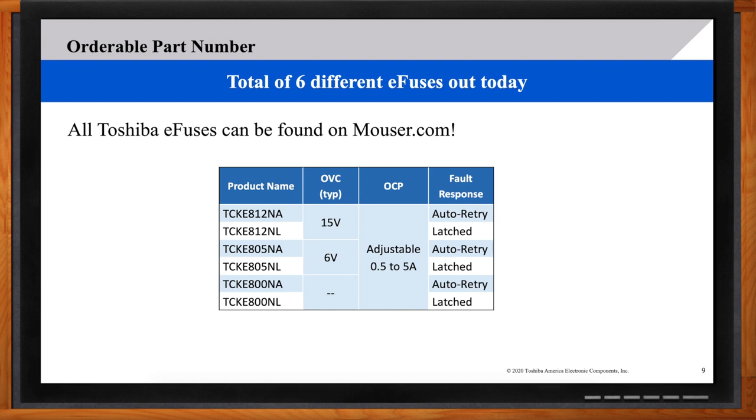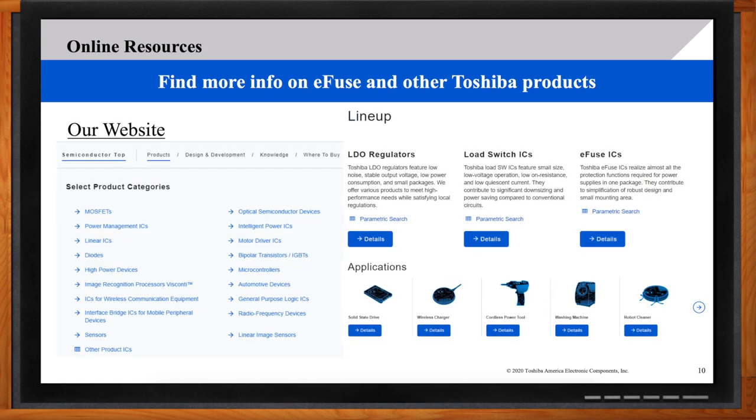Tell me a little bit more about where I can go for more information. You might have noticed Toshiba just did a revamp of our website. It's very sophisticated, very advanced now. So, I wanted to show you real quick how you can access more information on e-fuse and more of our IC products. If you go to our website and you click the product drop-down, you can see power management ICs. When you click that, you can see all of our ICs like LDO regulators, load switch ICs, and e-fuse ICs, and all the details and applications to follow.